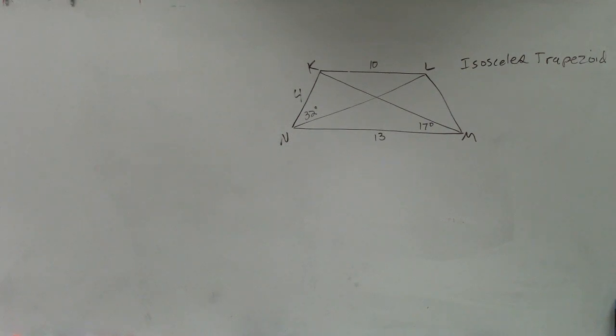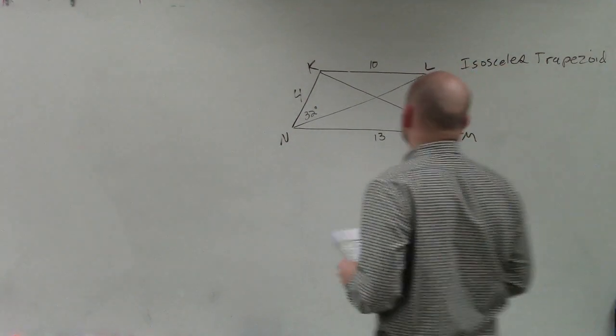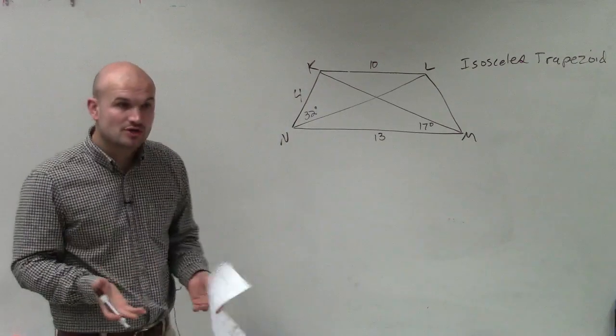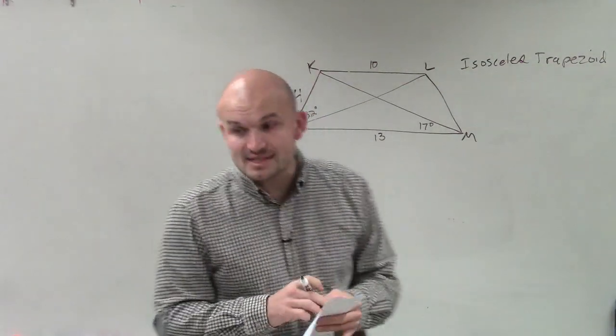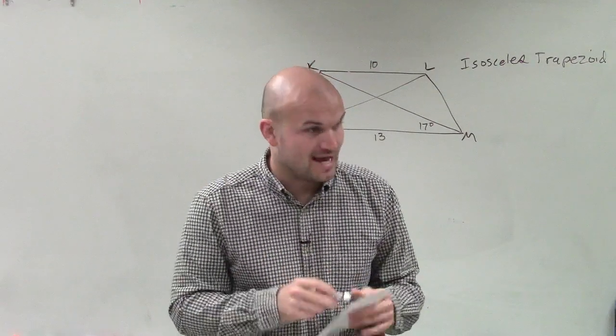So in this case, what we have is an isosceles trapezoid. And what they're asking us to do is to find all the missing terms, or all the missing lengths, and all the missing angles.